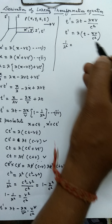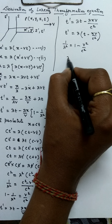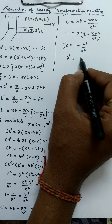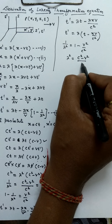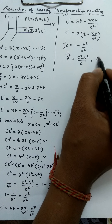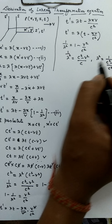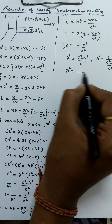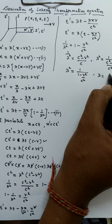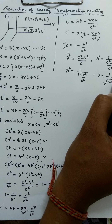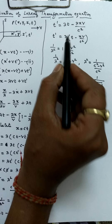Now we determine the value of lambda. From 1 upon lambda squared equals 1 minus v squared upon c squared, we get lambda squared equals 1 upon (1 minus v squared upon c squared), and therefore lambda equals 1 upon under root of (1 minus v squared upon c squared).